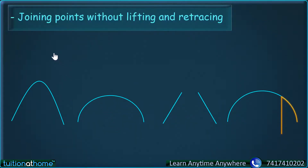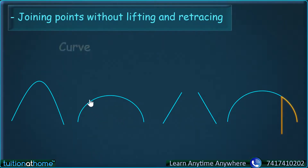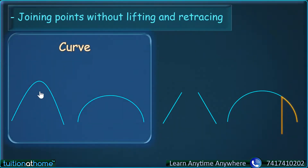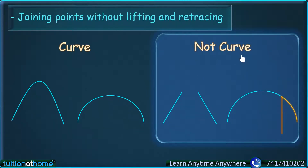In drawing it was all fun, but in maths it makes some sense. There are figures which are drawn joining points without lifting and without retracing. And we have given them a name — curve. So these two are curves, and those two are not curves. When we are drawing and we are not lifting, neither retracing, it is a curve. But when we are lifting or retracing, it is not a curve.